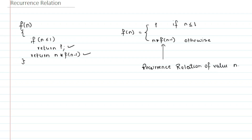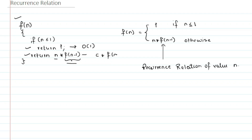Now let's try to find the recurrence relation for the time taken by this code. There are basically two return statements — this one and this one. This will take constant time because it is returning 1, so order of 1. Now let's try to figure out how much time this second statement is taking. We don't know how much time f of n minus 1 will take, but we do know the multiplication of these two terms will take constant time, plus f of n minus 1. So f of n equals order of 1 if n is less than 1, or f of n minus 1 plus c otherwise.